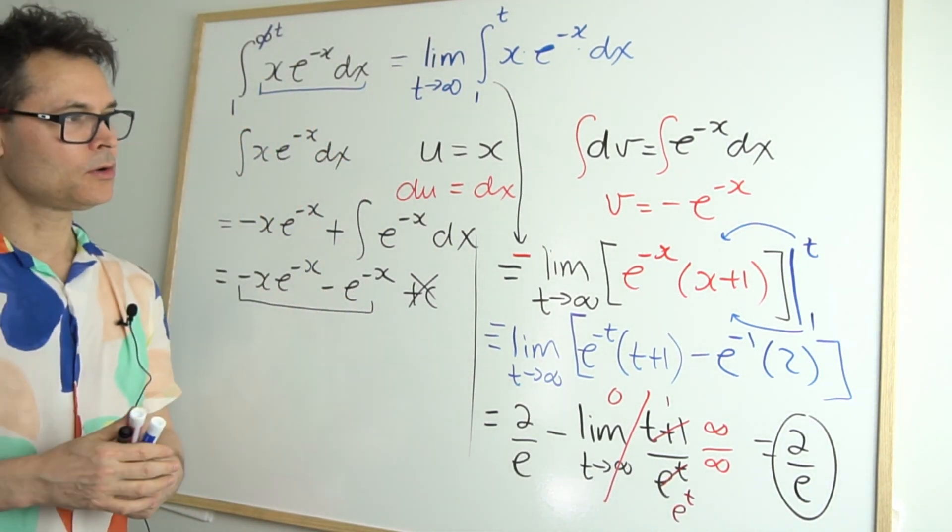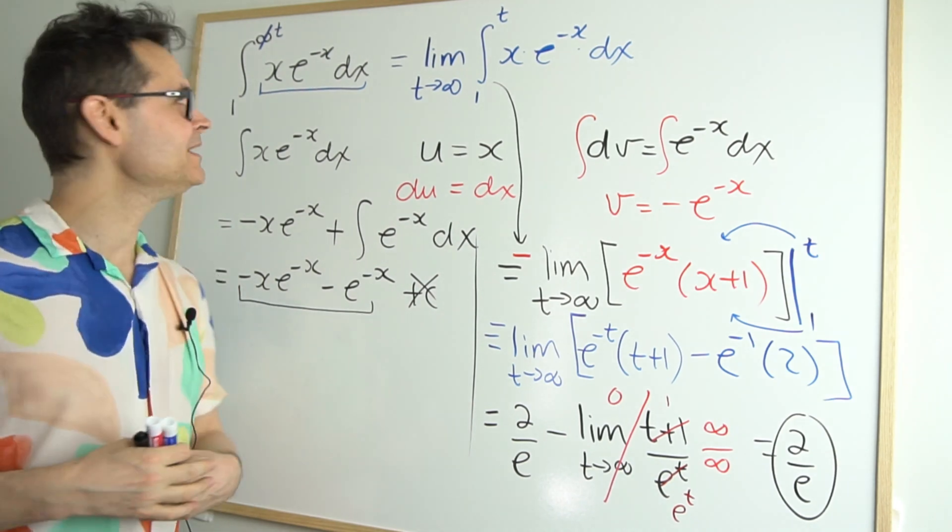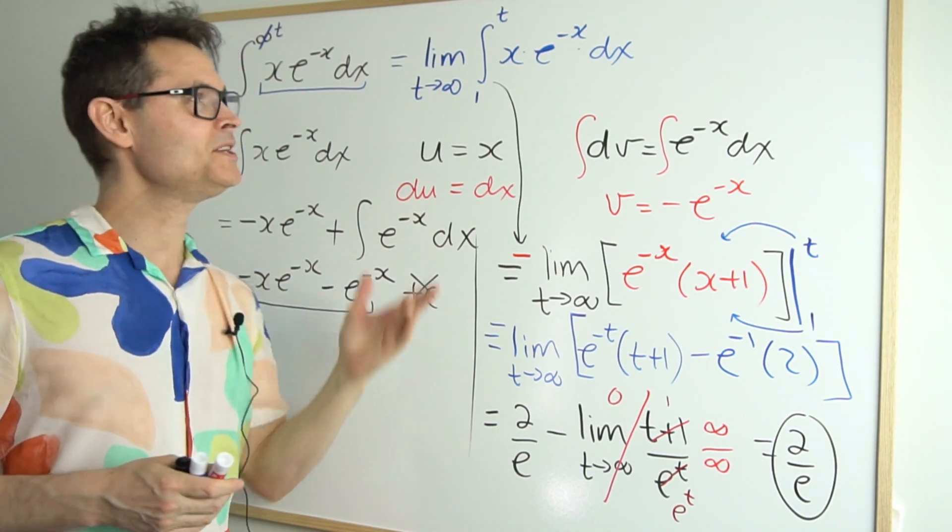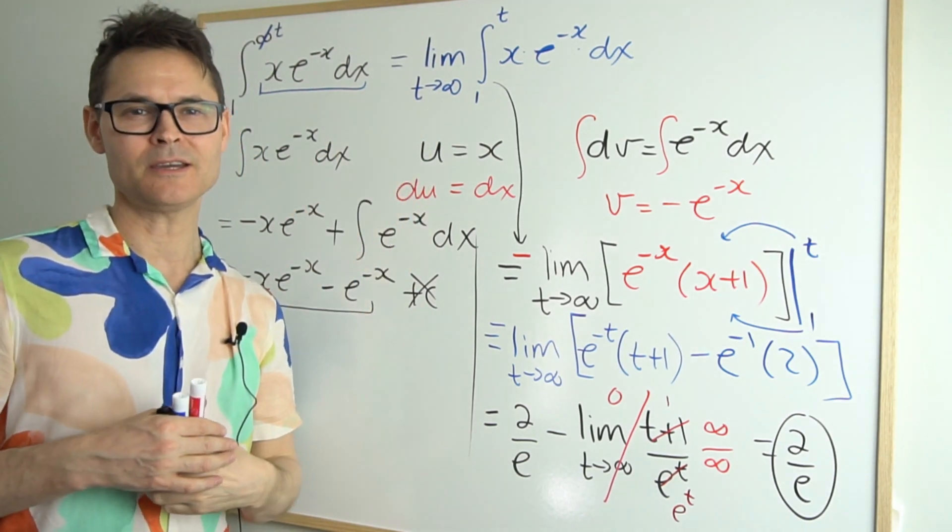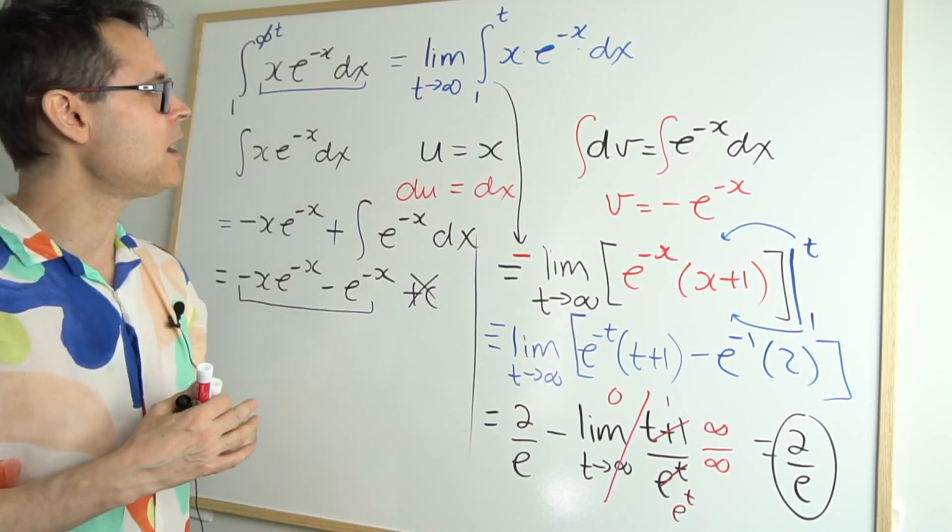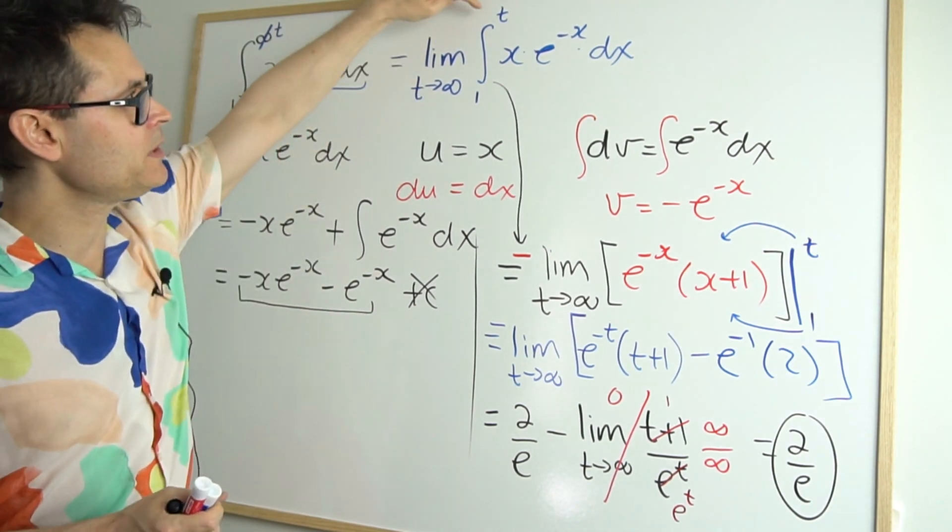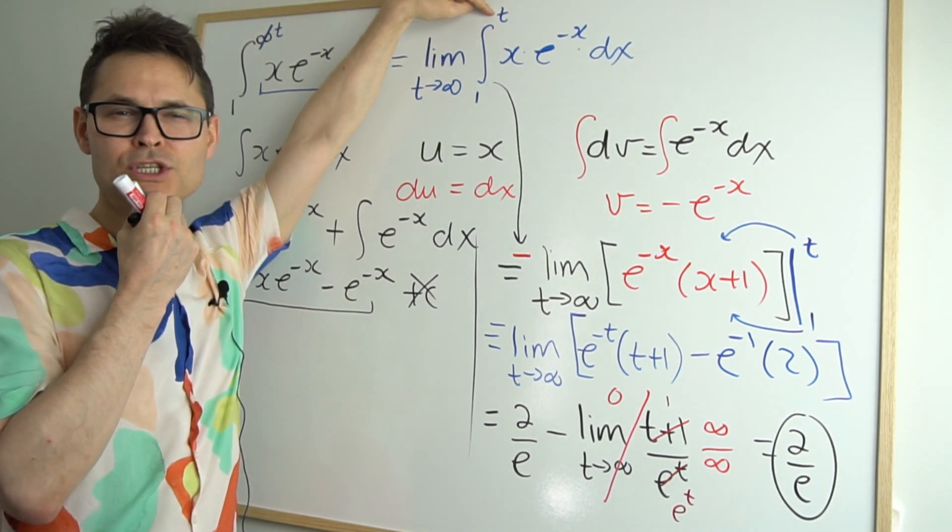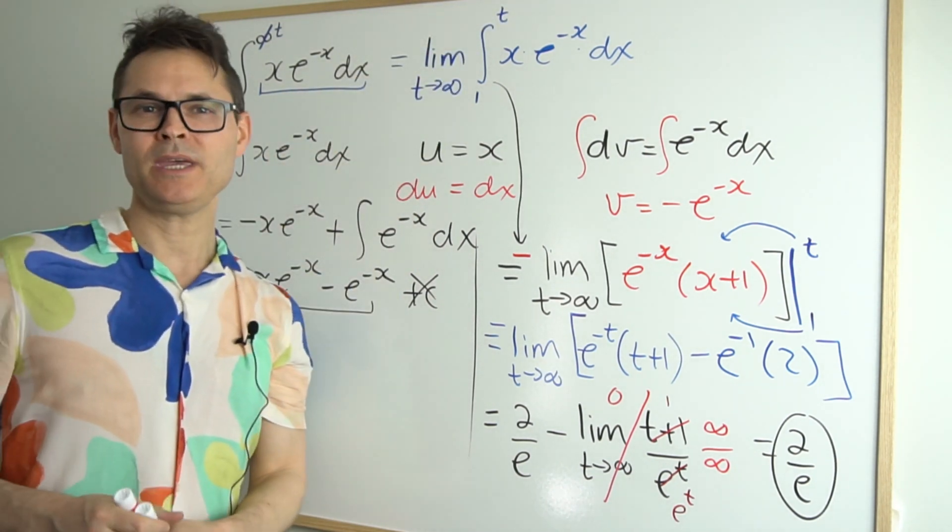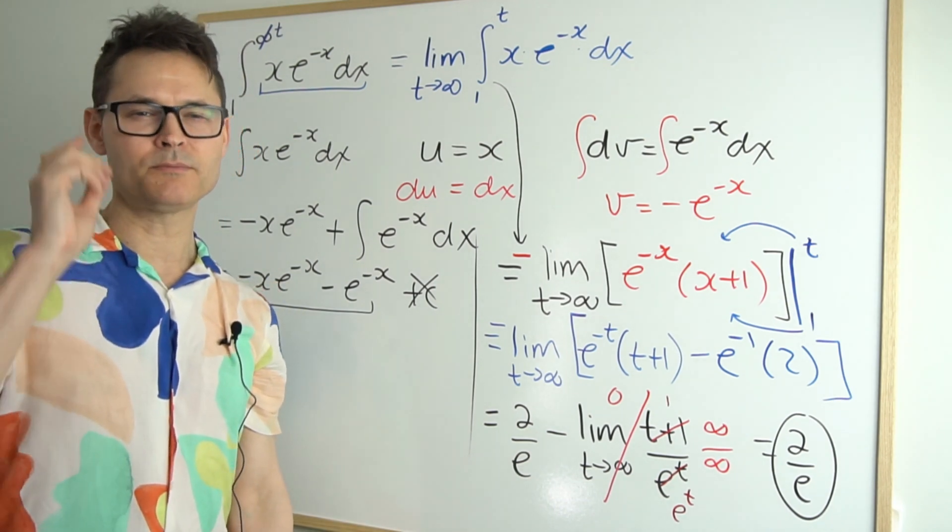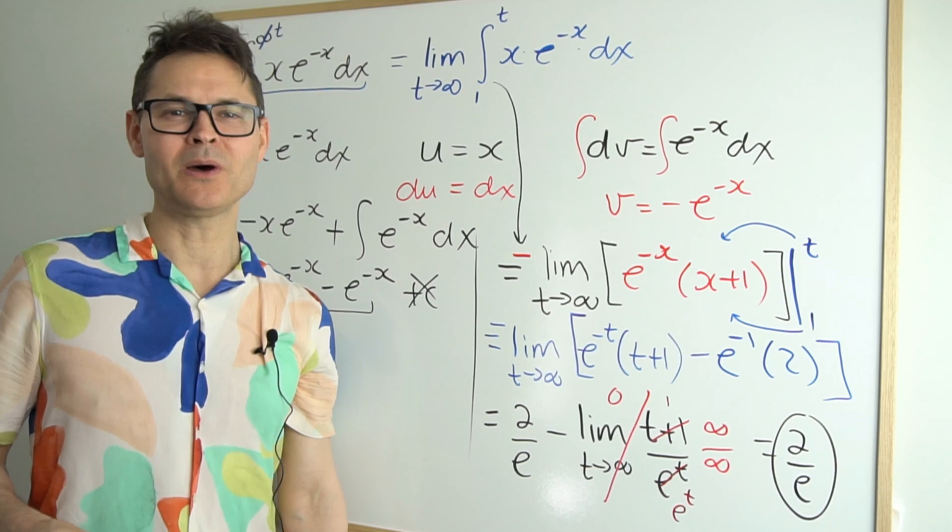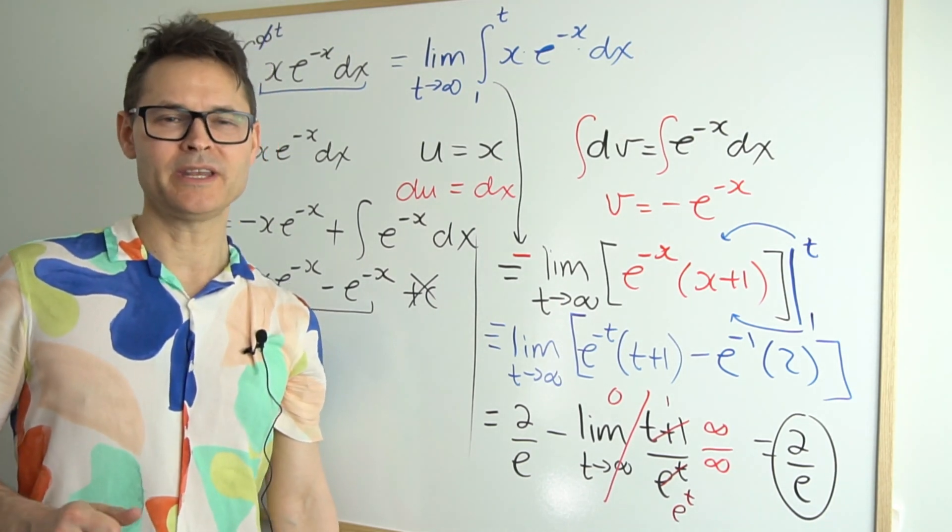All right there you go that's how you crack an improper integral using limits. I looked at older books and they don't do it like this which is interesting. They do sort of keep those infinity limits but the new math the way we do it now is we create this limit and we replace it with a parameter. Choose the favorite letter in the alphabet for yourself and there she be. If you like the video don't forget to slap a like on it and don't forget to subscribe if you haven't already and I'll see you right back here in the next video.